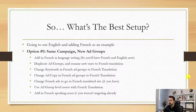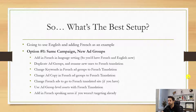So if we're doing the same campaign, the first thing you do is add in French in the language setting, so you'd have both French and English. Keep in mind that language setting just means we're showing to people that Google deems as both of those languages — nothing to do with the keywords. So you duplicate your ad groups and rename the new ones to the French translation. Then change the keywords in those French ad groups to the French translated versions, change the ad copy to French, and change the French ads to go to a French translated site if you have one.